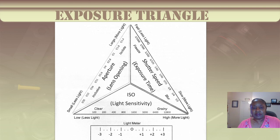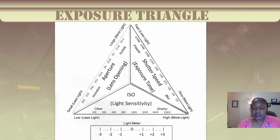The third side of our exposure triangle is ISO, or light sensitivity. It's a term that dates back to the film days of photography, when it was used to describe a film's sensitivity to light. Now it's used in similar circumstances on digital sensors, whereby adjusting the ISO changes how sensitive your sensor is to light hitting it. A higher ISO means more sensitivity, resulting in a brighter image. However, the higher the ISO, the more noise or grain you're introducing to the image. So do we give up some grain for the sake of a clearer image, or do we try to adjust the aperture or the shutter speed?